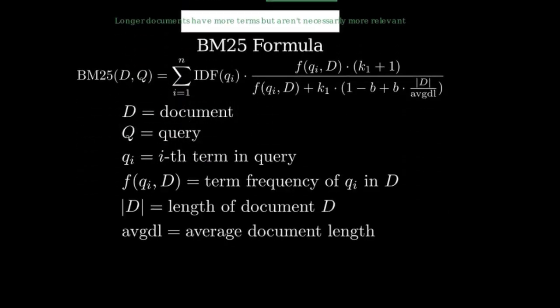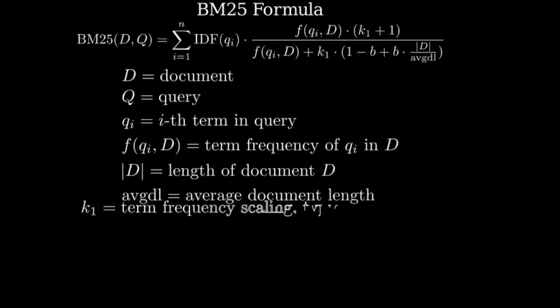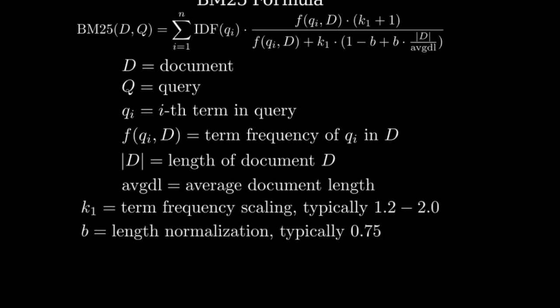In this formula, D represents the document, Q is the query, q_i is the i-th term in the query, f(q_i, D) is the term frequency of q_i in document D, |D| is the length of document D in words, avgdl is the average document length in the collection. k_1 and b are parameters that control the impact of term frequency and document length normalization, respectively. Typically, k_1 is set between 1.2 and 2.0, and b is set to 0.75.